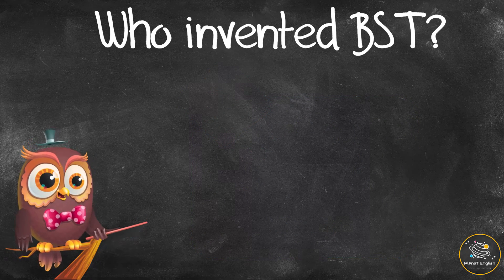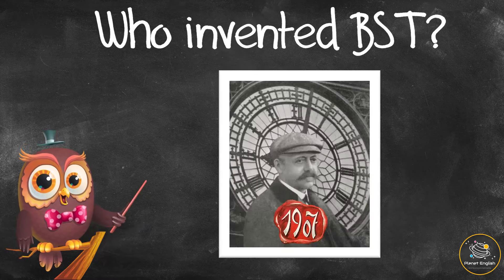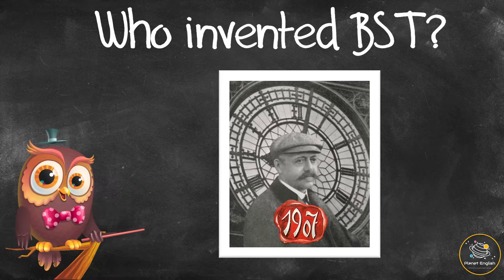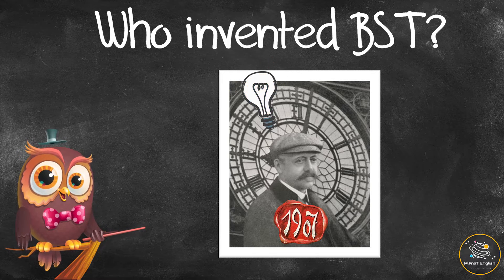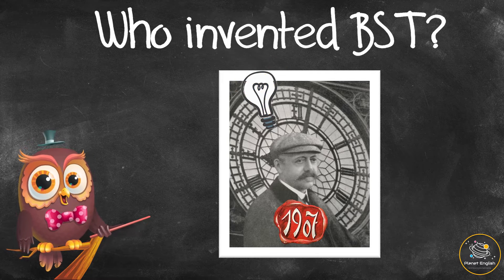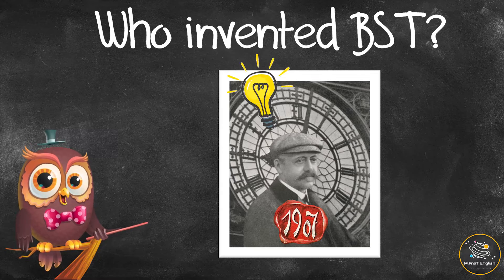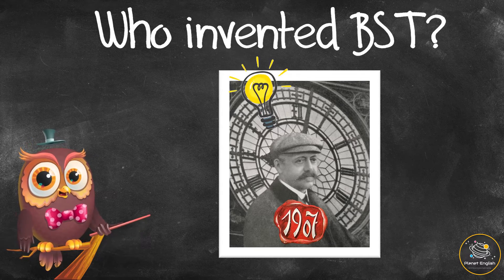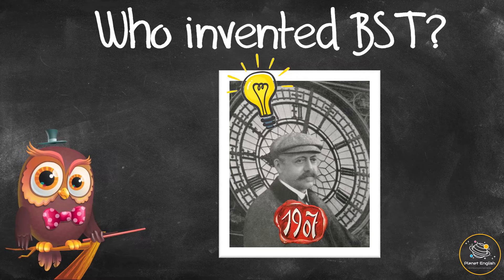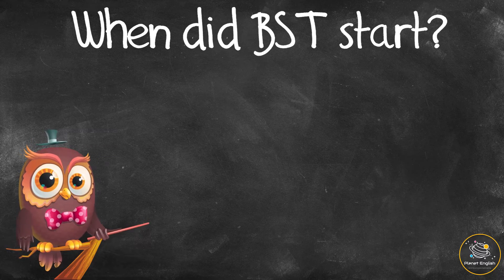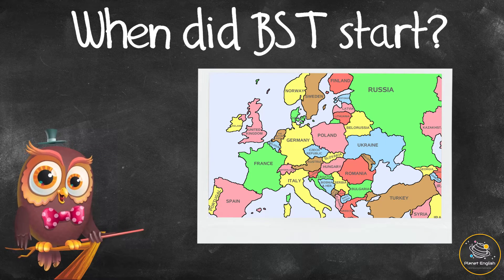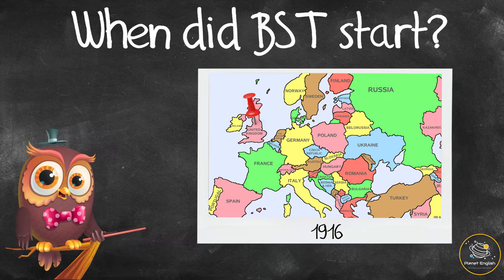Who invented BST? In 1907, a builder named William Willett had the idea to change the clocks during summer. He thought people were wasting important daylight hours by getting up at the same time in the summer as they did in the winter.